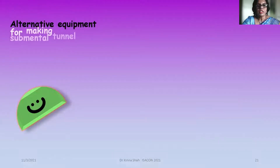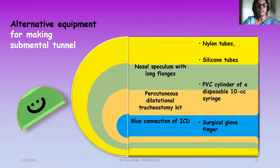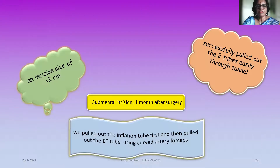Alternative equipment for widening the submental tunnel includes a nasal speculum with long flanges for quick dilatation, or a percutaneous tracheostomy kit. We have also used a blue-connector ICD tubing, a PVC cylinder from a disposable 10cc syringe, silicone tubes, nylon tubes, or a surgical glove filter to widen the submental tunnel.